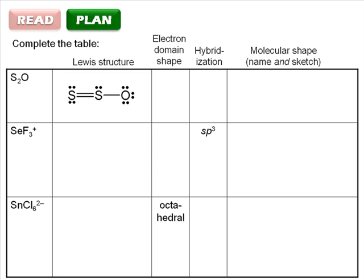For example, it's clear we only have to name the electron domain shape, not sketch it. It makes sense to solve the problem systematically, so let's start with S₂O, which already has a Lewis structure drawn for us.